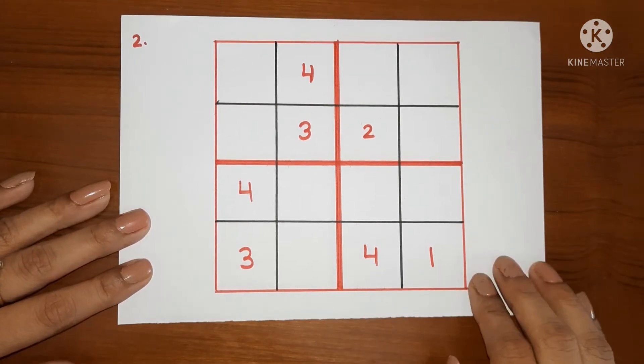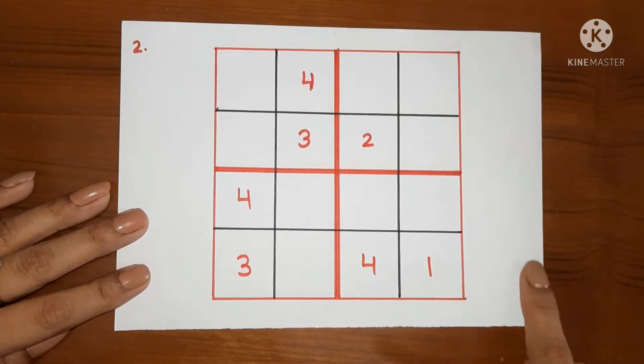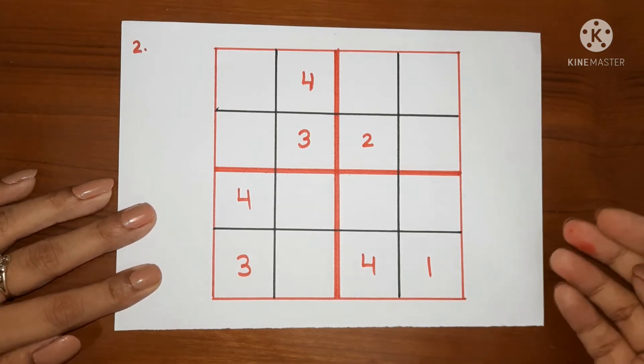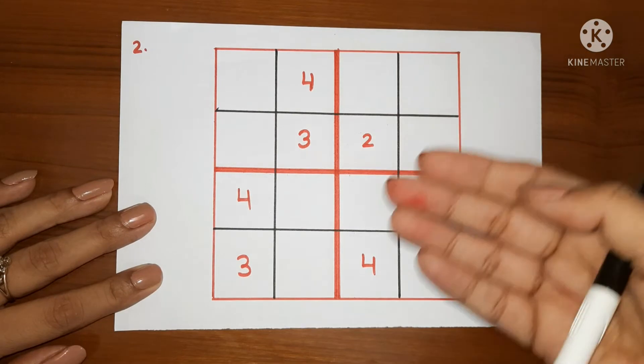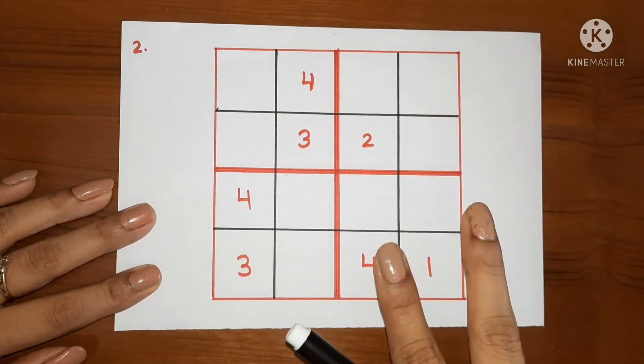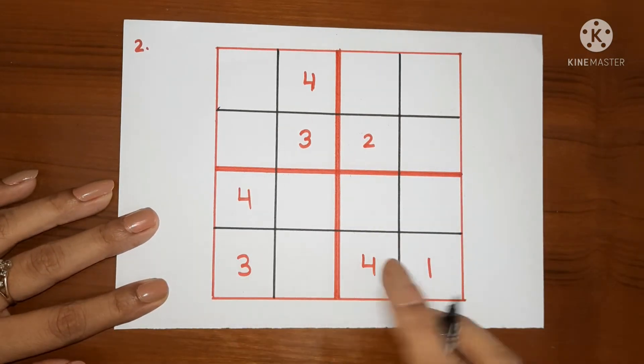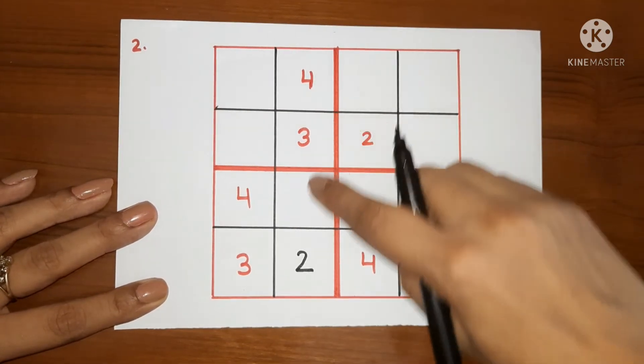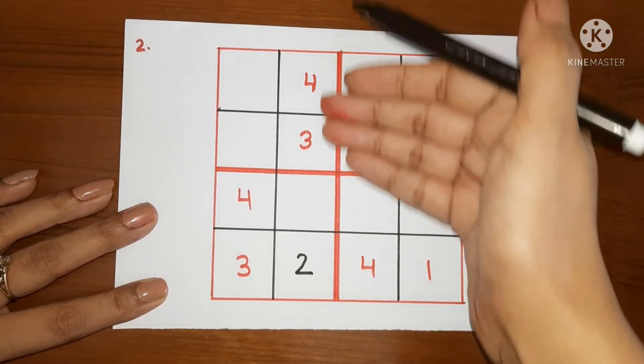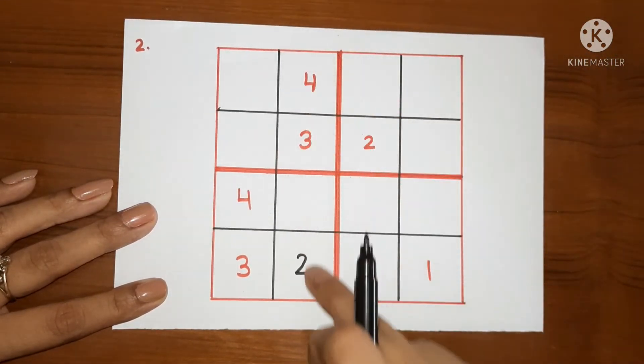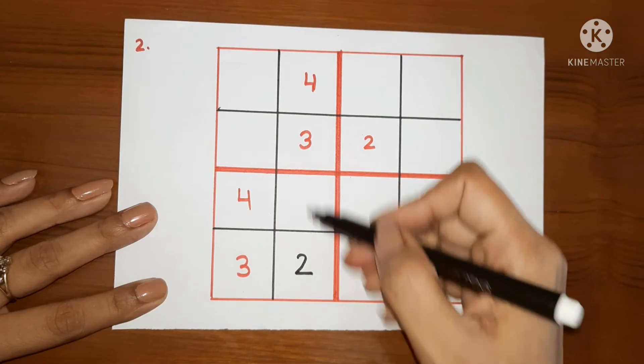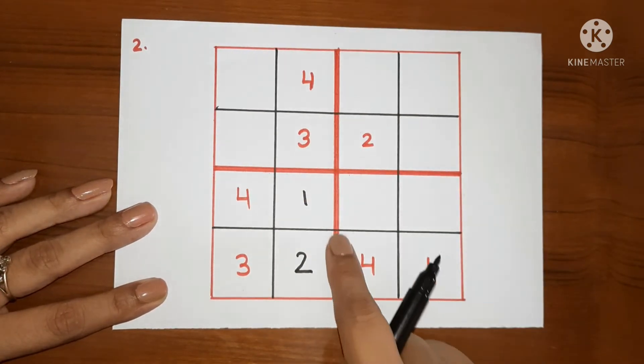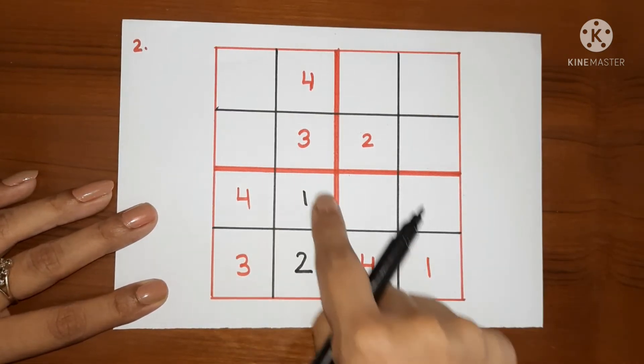Now, this puzzle is slightly difficult than the last one. Again, we will use the same method to solve this puzzle. First of all, we will look if there is any column or row with 3 numbers filled in. 1, 3, 4 are here. So 2 is missing. We will write 2 here. This column has 3 numbers filled in. So we will fill this number and we will complete this column. So 2, 3, 4 are here. We will fill 1 and this column is complete and also this box is complete now.